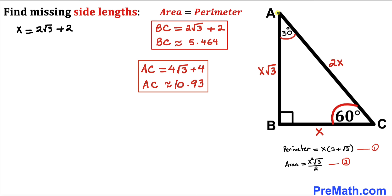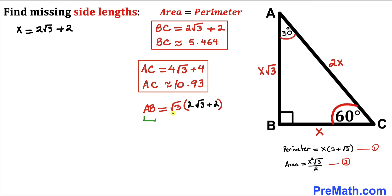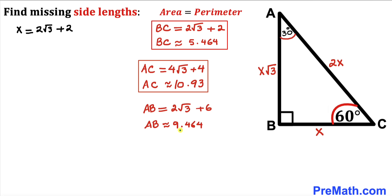Finally, side AB equals x times square root of 3. Distributing square root of 3 into x gives AB equals 2 times square root of 3 times square root of 3 plus 2 times square root of 3, which simplifies to 6 plus 2 square root of 3, approximately equal to 9.464 units.